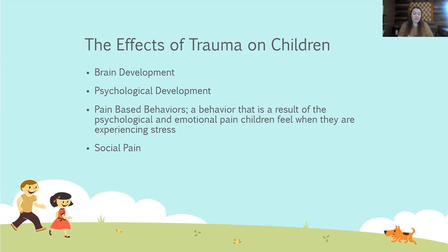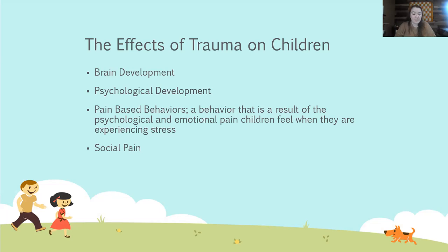The next effect of trauma is pain-based behavior, which we will talk about more later in the training. Pain-based behaviors take many forms, which reenact trauma by exhibiting challenging behaviors. Children with trauma tend to overreact in situations. Pain-based behavior is a result of the physiological and emotional pain children feel when they experience stress — which may include impulse outbursts, aggressive acts, running away, self-injury, defiance, and inflexibility. These responses may be triggered when a child feels a loss of control or is reminded of the traumatic experience.